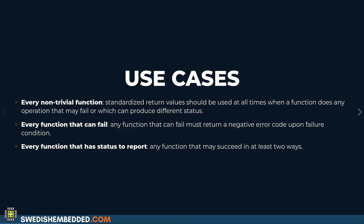If you have a function that has at least basically two types of results that can happen — for example, a success, or a success and a partial success, or a success or a failure — then we always use an integer status code returned from that function. We always try to return the status through the return value, not through a parameter. If we have some complex value, we can return that through a parameter as well as returning a status code, but the status code is our primary way of returning status.